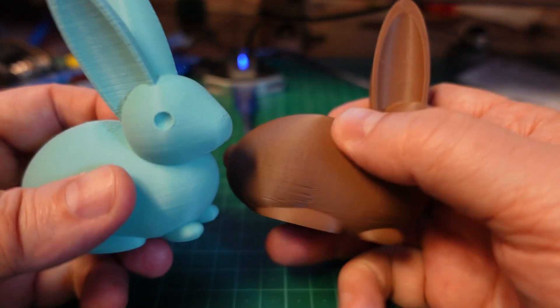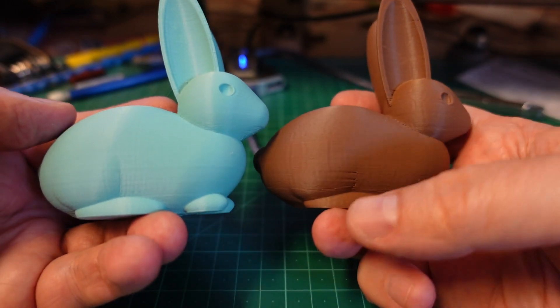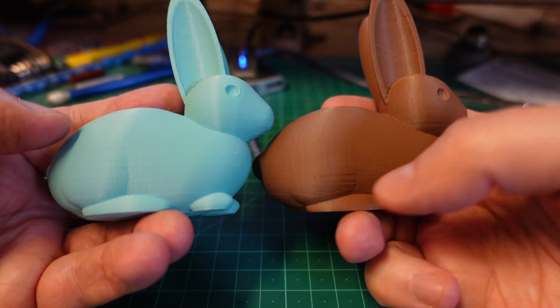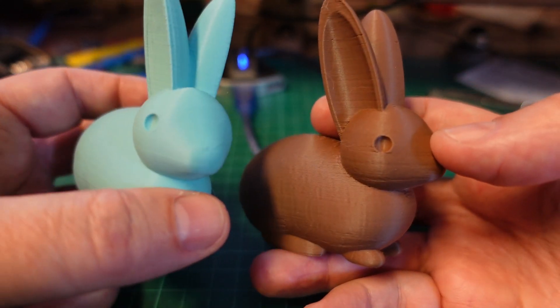Only now I noticed that this profile by default doesn't have a skirt around the object. Two rabbits, and don't forget the brown version was printed 14 minutes faster. At first look I am seeing some kind of lines here, I'm not sure what they are. But otherwise from the ghosting and ringing aspect they look very similar.